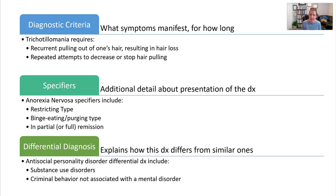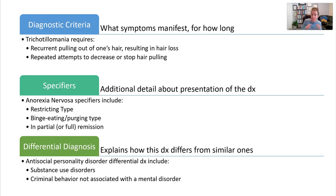Each disorder also has a section called differential diagnosis, which lists similar diagnoses and explains how those diagnoses are different and how you would distinguish between the two. For example, with antisocial personality disorder, differential diagnoses include substance use disorders — someone acting antisocial or aggressive because of substance intoxication — or it could be criminal behavior not associated with a mental disorder, such as crimes committed for gain rather than due to a personality disorder.